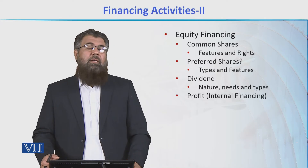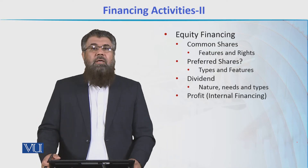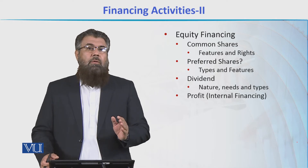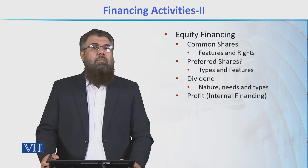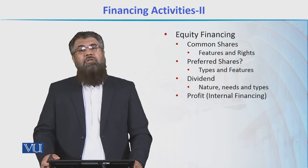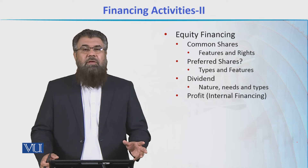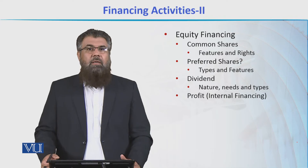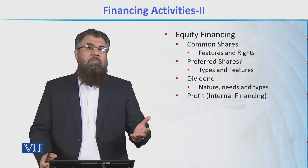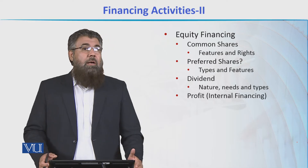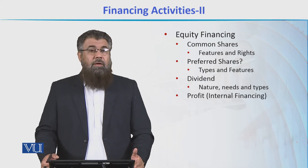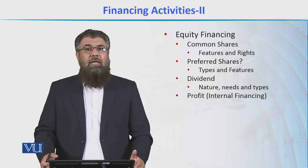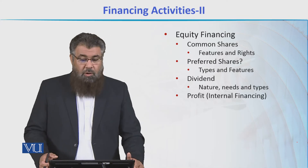Having said this, preferred shareholders get dividend or profit at a given rate which is generally less than what the common shareholders get. Preferred shareholders get a fixed rate of dividend or profit, which ensures their return to some extent, whereas common shareholders may or may not get that return. But if a company is earning more and has a lot of profits, then preferred shareholders will have that fixed rate of return, whereas common shareholders will have a lot more than that.